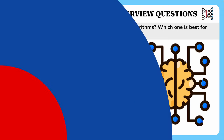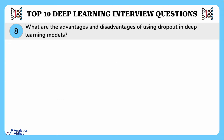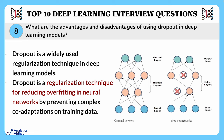The next question asks about the advantages and disadvantages of using dropout in deep learning models. Dropout is a widely used regularization technique that reduces overfitting in neural networks by preventing complex co-adaptations on training data. During training, random neurons are temporarily ignored, preventing the model from relying too much on specific neurons, making it more adaptable, robust, and less likely to overfit.